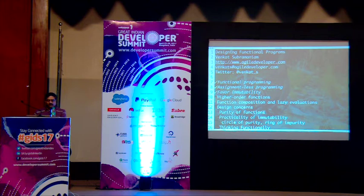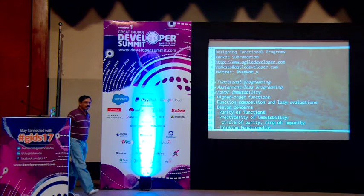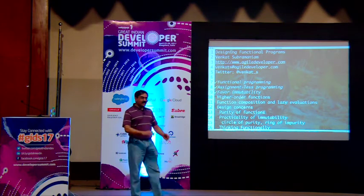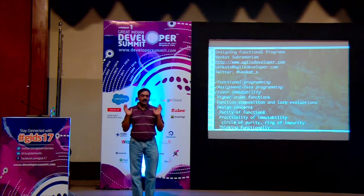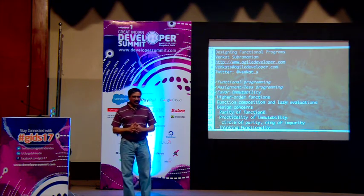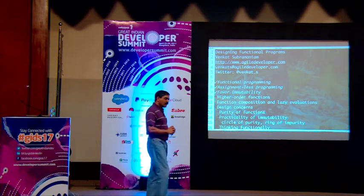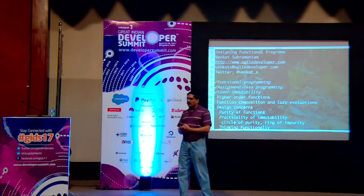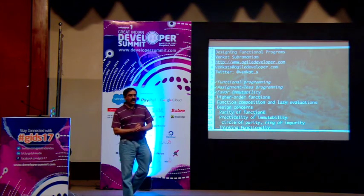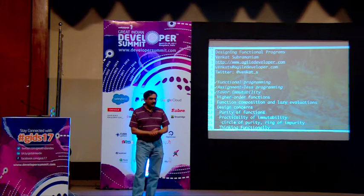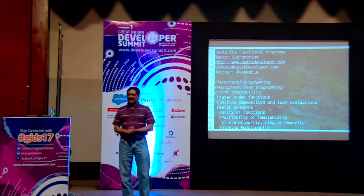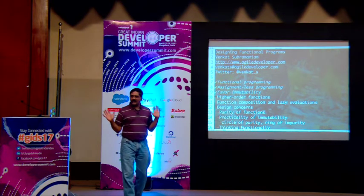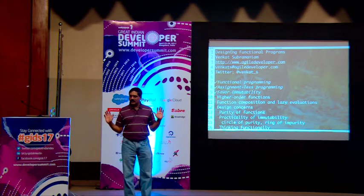Functional programming favors immutability — they don't want you to mutate variables. Why? If you mutate variables, concurrency is hard. When you have multiple threads, things mess up. If you don't mutate, you don't have to protect what doesn't change. Second, when you promise immutability, a compiler can perform optimizations very nicely. The compiler says, 'I know this is immutable, I can take some things for granted.' But if something is mutable, it has to be very cautious.